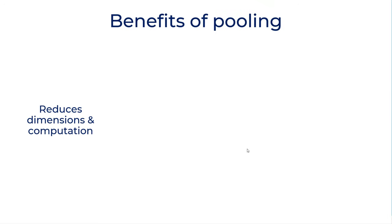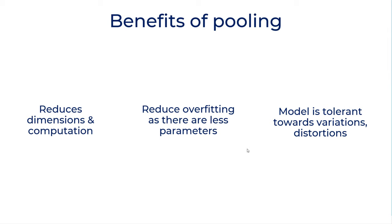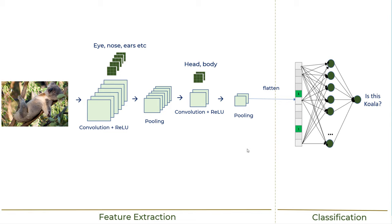Benefits of pooling number one obvious, it's reducing your dimension and computation. The second benefit, it reduce overfitting because there are less parameters. And the third one is model is variant. Tolerant towards variation and distortion. Because if there is a distortion and if you are picking just a maximum number, you are capturing the main feature and you are filtering all the noise.